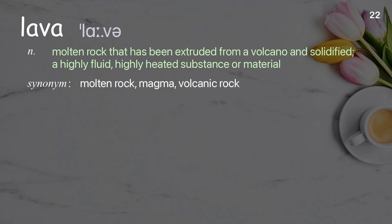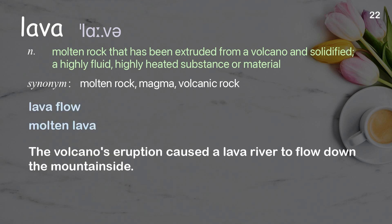Lava: Molten rock that has been extruded from a volcano and solidified; a highly fluid, highly heated substance or material. The volcano's eruption caused a lava river to flow down the mountainside.